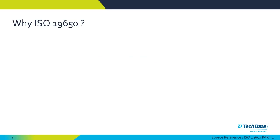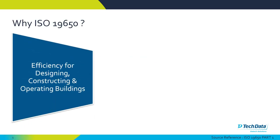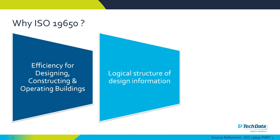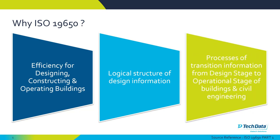Why would you use ISO 19650? For efficiency in designing, constructing and operating buildings, for arranging and organising a logical structure of design and construction information, and then for the processes of transitioning information from the design stage through the construction stage and across the operational or maintenance stage of building and civil engineering projects.